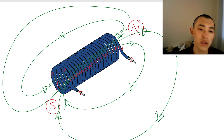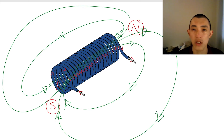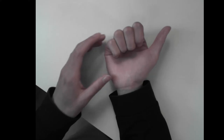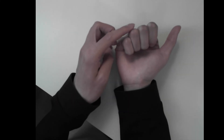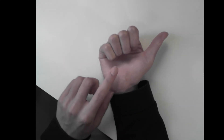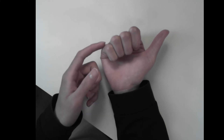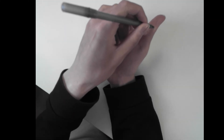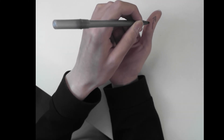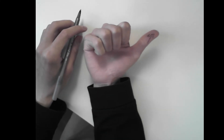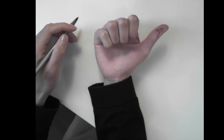Now let's try and use our right hand to be able to predict, given the direction of the current, which direction the north pole is going to be in. Our four fingers represent the main structure of the solenoid — see how they kind of curl around like the solenoid curls? Then, depending on the direction that the current runs, our thumb points to the direction of the north pole. So this is going to be our north pole — our thumb points in the direction of the north pole.